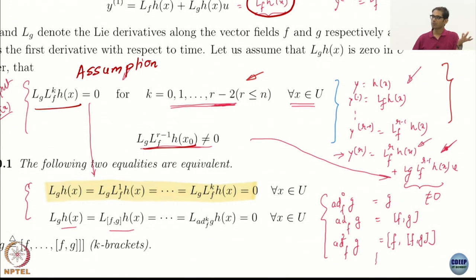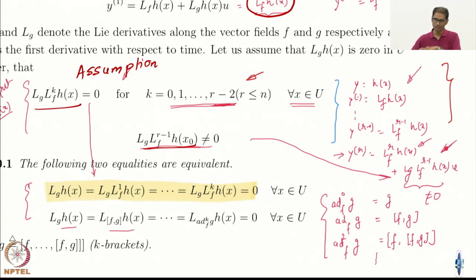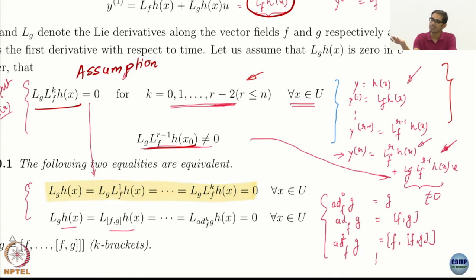From a controllability perspective, you can move along successive Lie brackets as well. It is saying that you can move along f and g, and you can also move along the Lie bracket of f and g, and along successive Lie brackets of f and g. These are the directions in which you can move.